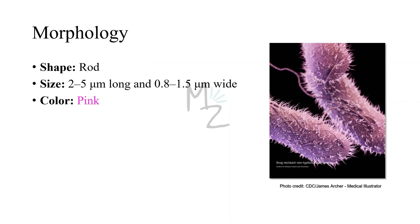Morphology. Salmonella are rod-shaped bacteria — this is the bacillus form. They vary in size from 2 to 5 micrometers long and 0.8 to 1.5 micrometers wide. Salmonella are pink or red colored because they are gram negative. I do have a video on gram staining — I've linked it above, be sure to check it out.